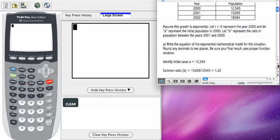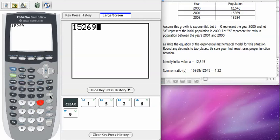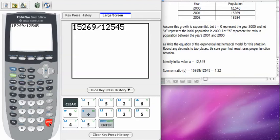15,269 divided by 12,545. If we divide that on our calculator, I'm going to do that over here, 15,269 divided by 12,545, we're going to get the number you see on your screen, and we're going to round that number to two decimal places to get 1.22.